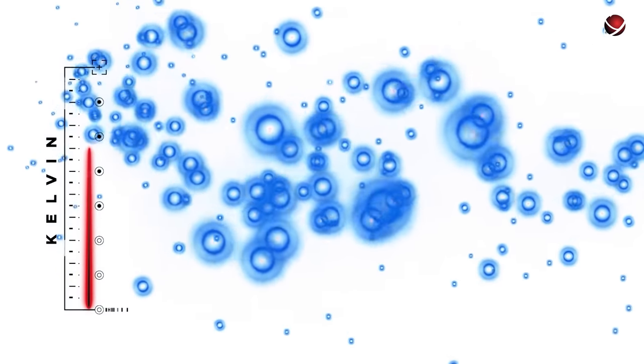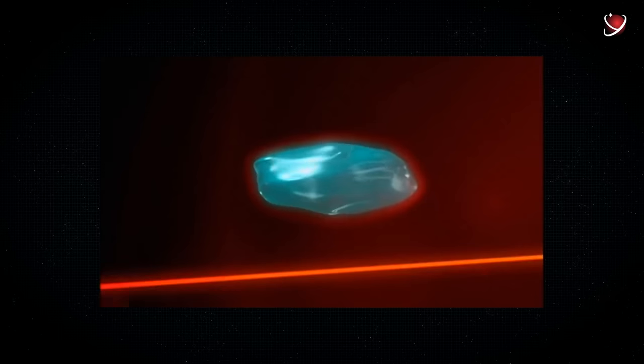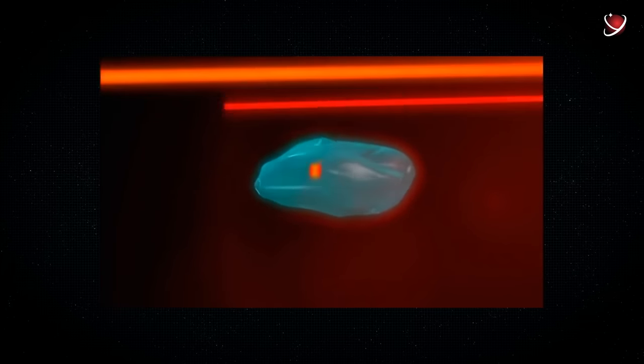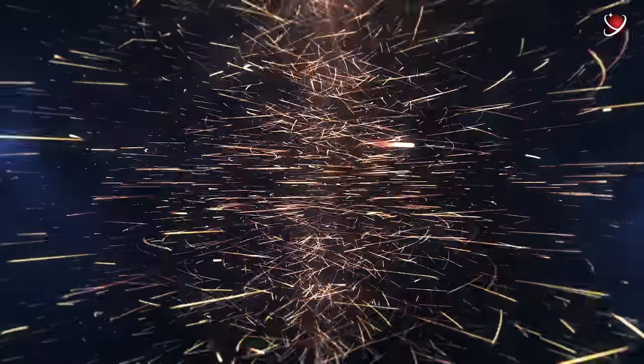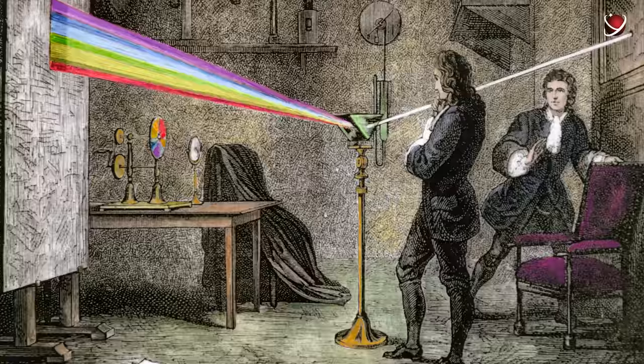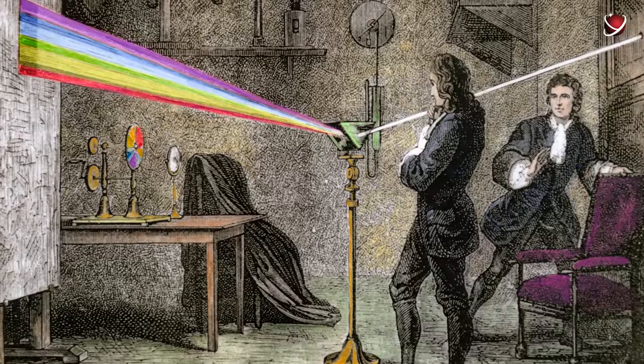In the lab, scientists have already learned how to experimentally slow down light using the Bose-Einstein condensate, and not by thousands, but up to an incredible 0.2 millimeters per second. Would you believe this? It's too early to predict how this fantastic state of matter could benefit humanity, just like the first researchers of electricity could hardly even imagine what their findings would turn into in a matter of decades.